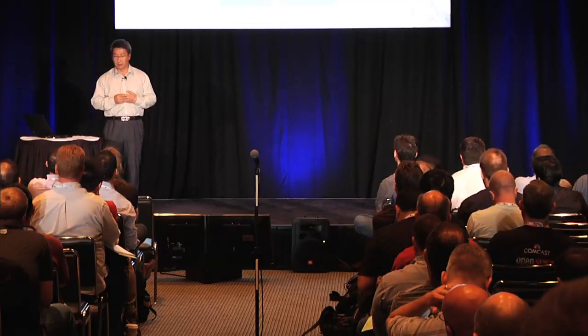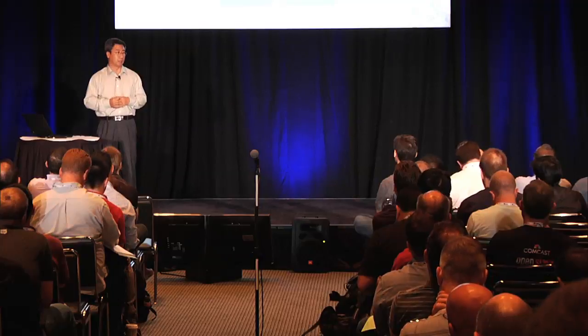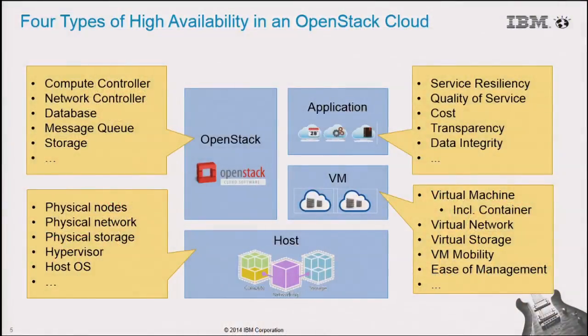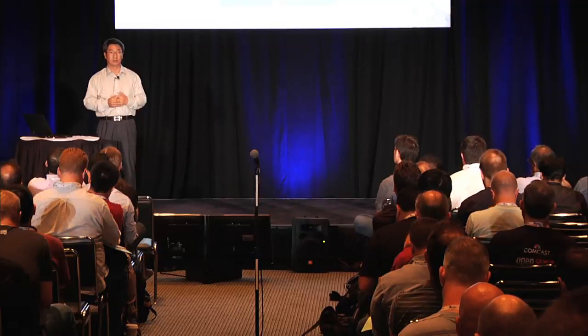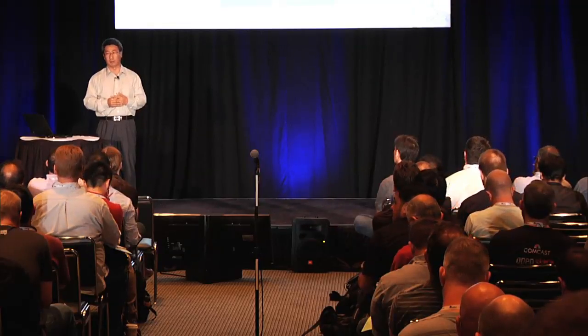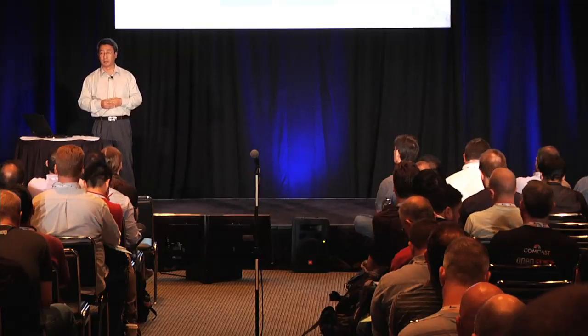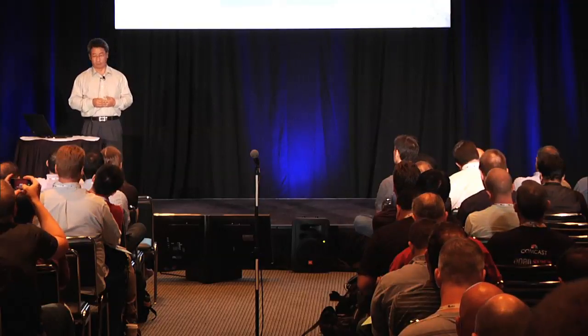The last high availability type is about user applications and user services — and that is what our customers really care about. They don't care whether a VM failed, the host failed, or the storage failed, so long as their application and service is available. It's your job to make things highly available. So the last type is application and service-level availability.